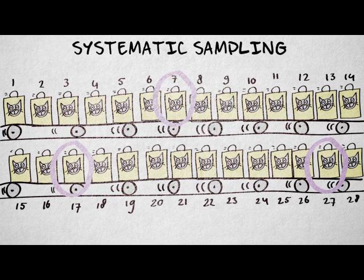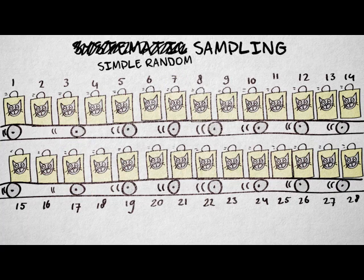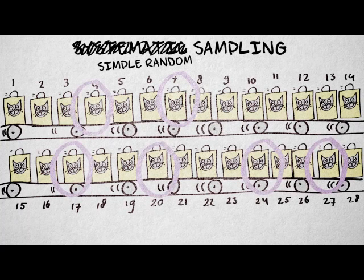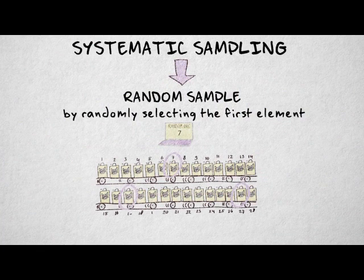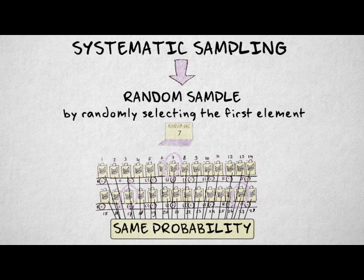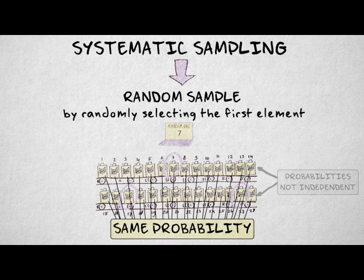It would be much harder to select elements according to random numbers — say bag number 7, 30, 36, 41, etc. — especially if the assembly line moves very fast. With this approach, each element has an equal probability of being selected, but the probabilities are no longer independent.